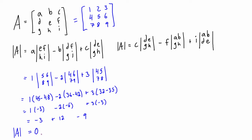The determinant of A ends up being zero. The determinant can be any real number, but if it is zero we call it a singular matrix, and it turns out this matrix is not invertible. We'll get to matrix inverses in a few videos from now.